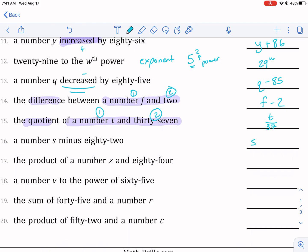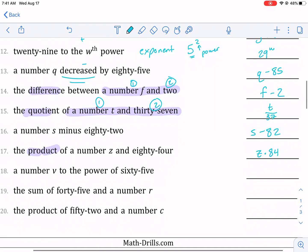The product of a number—here's a new one: product. This is the same thing as multiplication. So if you're talking about a product, that means we're talking about multiplication of a number z and 84. Again, it doesn't matter which order you have it for multiplication and addition. You can just write it like that.